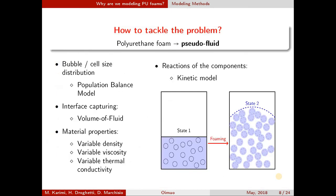Now let's see how we are approaching the problem. The first simplifying assumption is that we are treating the foam as a pseudo-fluid, meaning the first phase is the liquid phase including the air bubbles, and the second phase is the gas phase filling the rest of the cavity. We have four main challenges: first, we need information about the cell size distribution, for which we solve the population balance equation; second, we want to monitor the interface when the foam is expanding, so we use the volume of fluid method; third, during polymerization many material properties are changing, which we include in the solver; and finally, the kinetics, which is an important part of this solution.